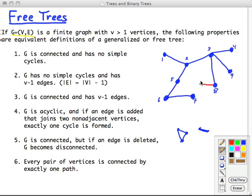The flip side of that: G is connected, but if you delete an edge, then it becomes disconnected. As you can see, delete any one of these edges and some node will be unreachable from some other node. Finally, every pair of vertices is connected by exactly one path. If you want to get from here to here, there's only one way to go. Of course, if there was more than one path, then you would have a cycle. That leads us back to number one.